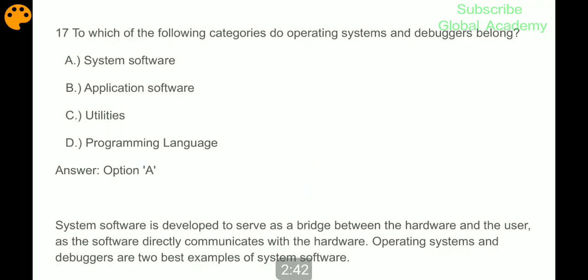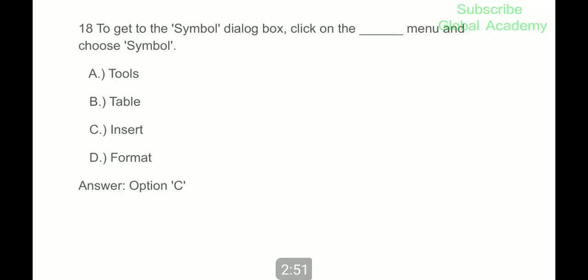To which of the following categories do operating systems and debuggers belong? System software. To get to the symbol dialog box, click on the data menu and choose symbol insert.